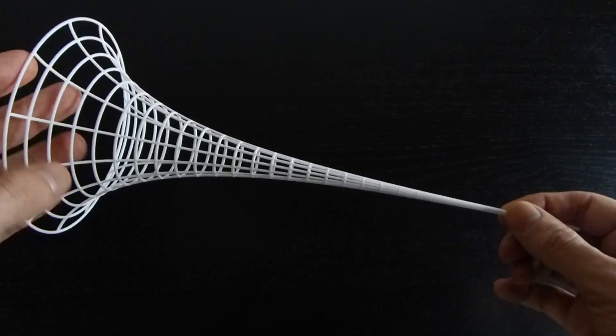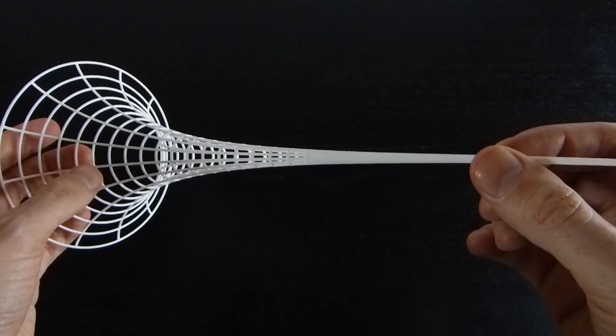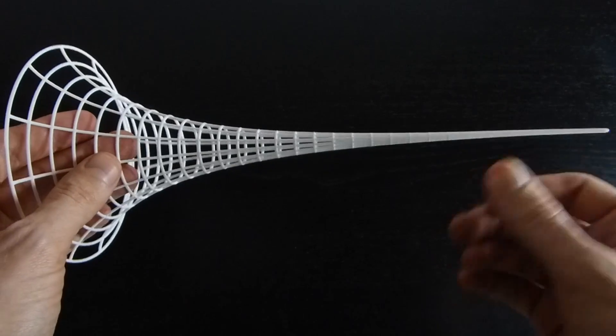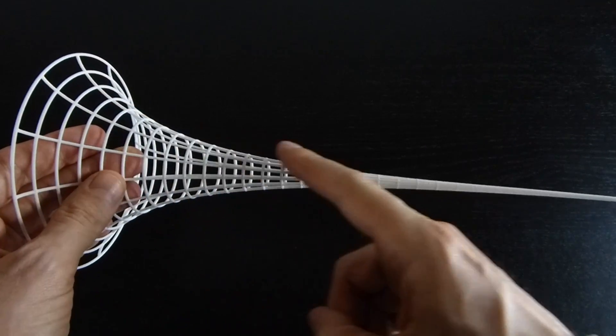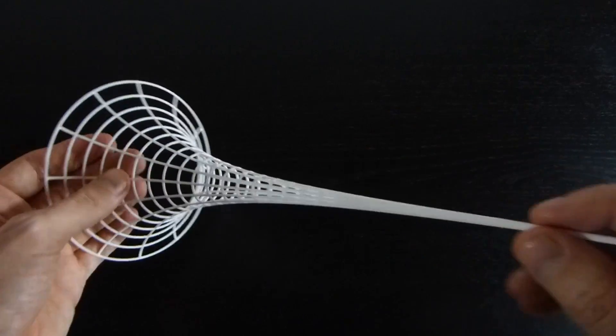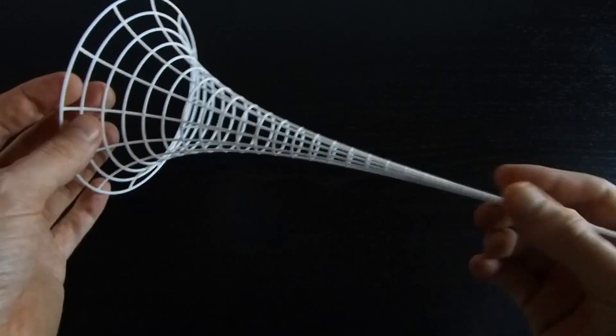So where does the shape come from? You get this by taking a curve called a tractrix, which is this curve along here, and then revolving it around an axis. You can see that it's rotationally symmetric.